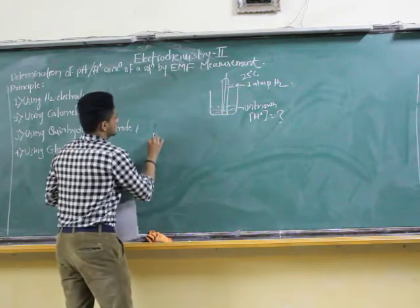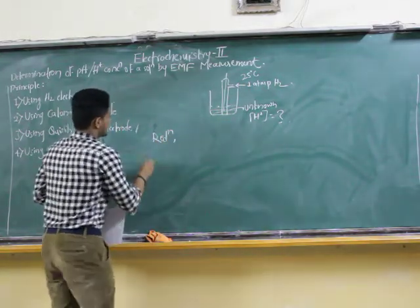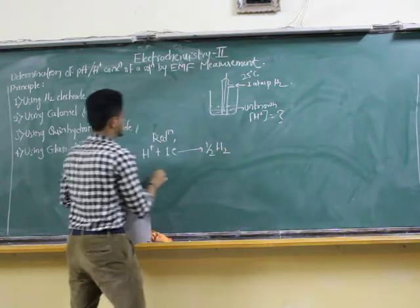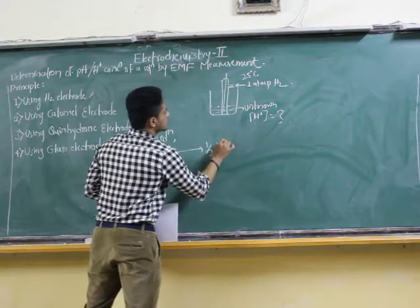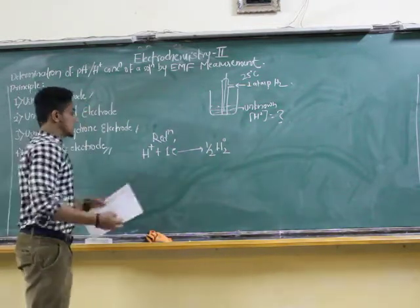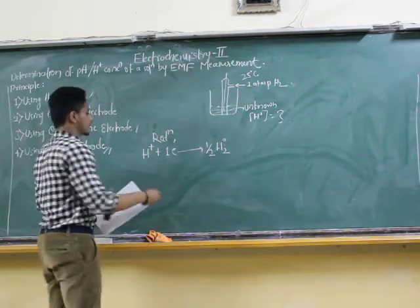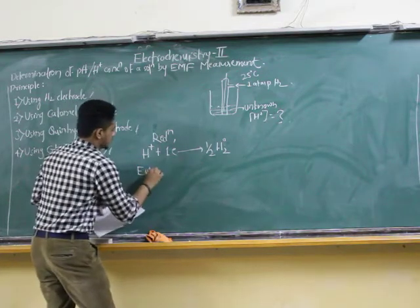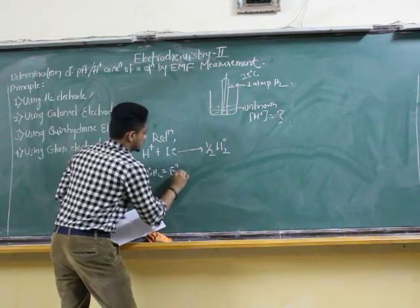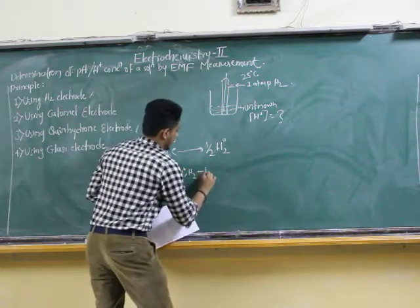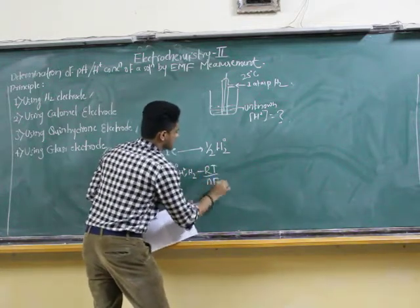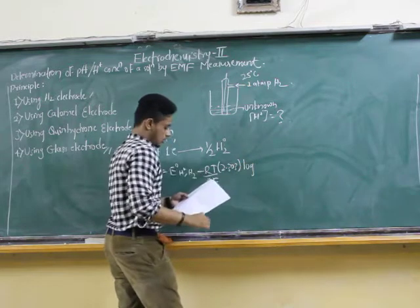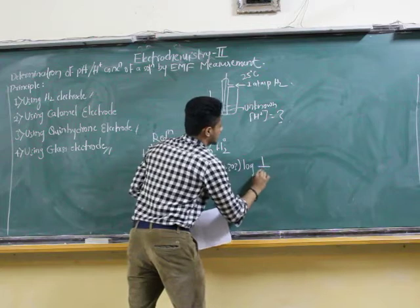Let me consider a reduction reaction. H⁺ ion will gain one electron and convert into ½ H₂. This is a reduction — oxidation state goes from +1 to 0. This is the half-cell reaction. The potential is given by the reduction potential E(H⁺/H₂), which equals E°(H⁺/H₂) minus (RT/nF) × 2.303 log(1/[H⁺]), by the Nernst equation.